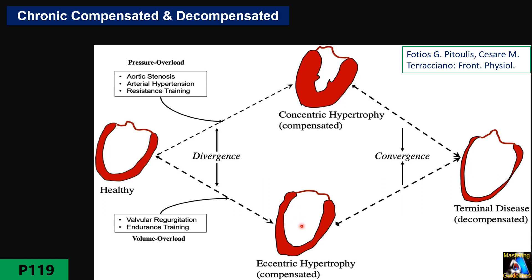If the process of MR continues, the heart progresses to the decompensated stage. Here, the enlargement reaches a breaking point where it no longer helps increase cardiac output according to Starling's Law. The heart reaches full end-stage heart failure with both left ventricular and left atrial enlargement. The patient develops dyspnea even at rest or with minimal activity, and finally pulmonary hypertension, right-sided failure, and cardiorenal syndrome develop.